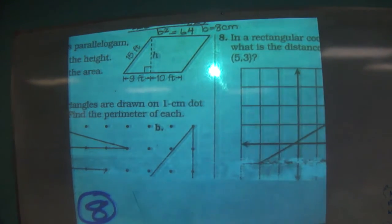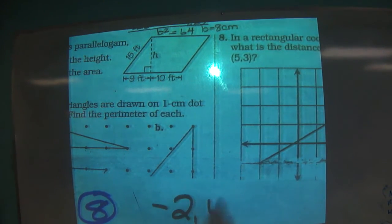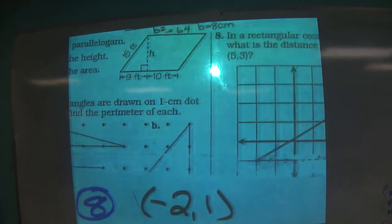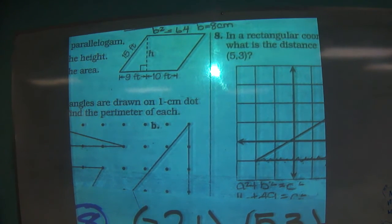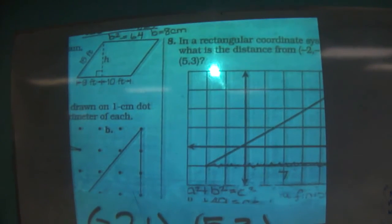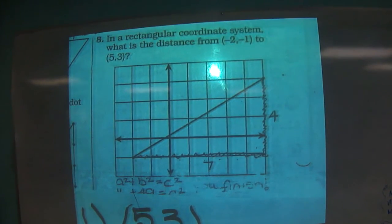What is the distance from negative 2, 1 to 2, 5, 3? Well, they showed you the line. So what you have to do in that situation is it's like slope. You have to draw the rest of the triangle.